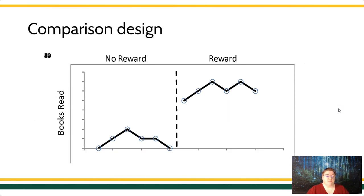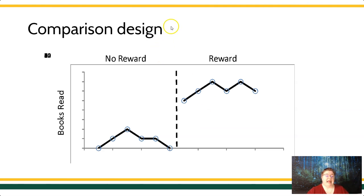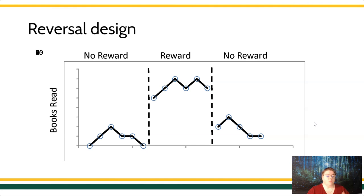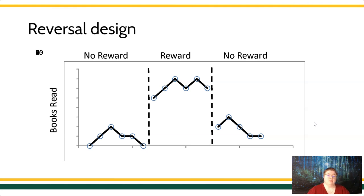Here's a comparison design: books read at 0, 1, 2, 1, 1, 0 in baseline. Then we put in the reward and see 6, 7, 8, 7, 8, 7 — a pretty big increase. There's no experimental control in this comparison design; anything could have happened when that reward started. But instead, if we take away the treatment and go back to a no-reward baseline condition, and we see the number of books read go from 7 or 8 down to 2, 3, 2, 1, 1 — we see it was low, got high, got low again. That behavior changed when treatment was in place and only when treatment was in place, because we see the treatment was removed and it went back down.